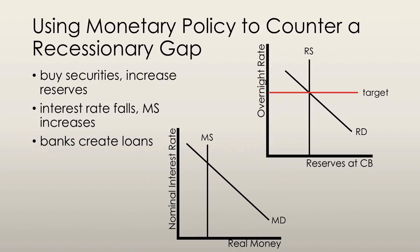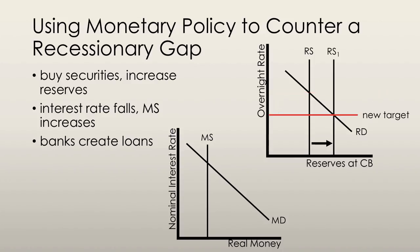When the central bank observes a recessionary gap — where real GDP is below potential GDP and deflationary pressures are affecting the economy — the central bank aims to reduce interest rates in order to boost aggregate demand and restore long-run macroeconomic equilibrium. To do this, the central bank must lower interest rates. In order to lower the overnight loans rate, the central bank must buy securities and increase the supply of bank reserves. With increased reserves, banks create deposits by making loans.